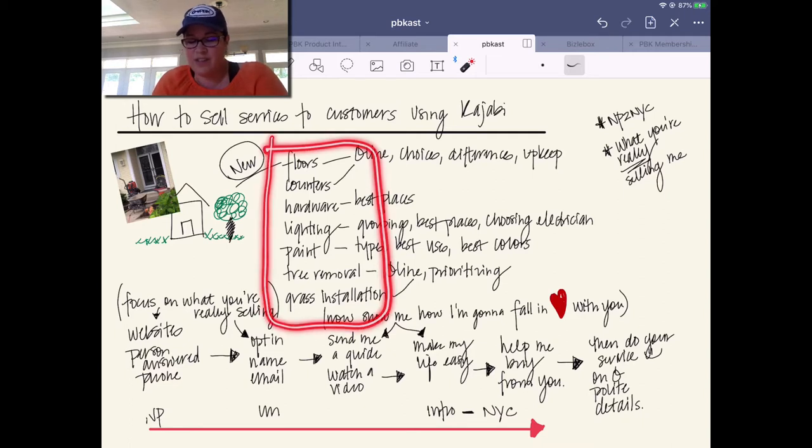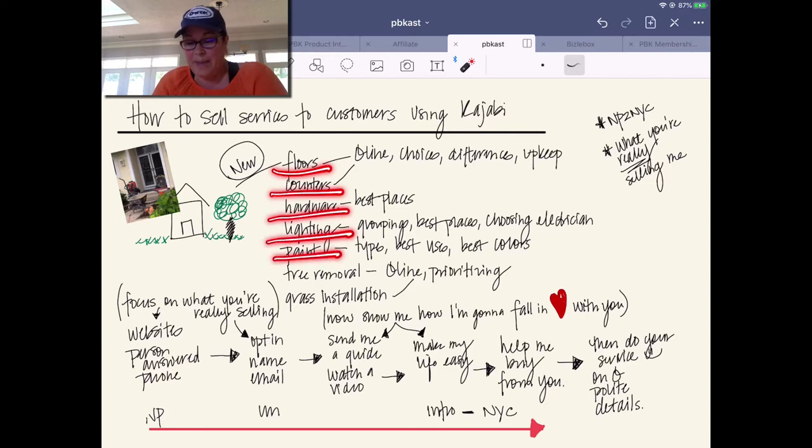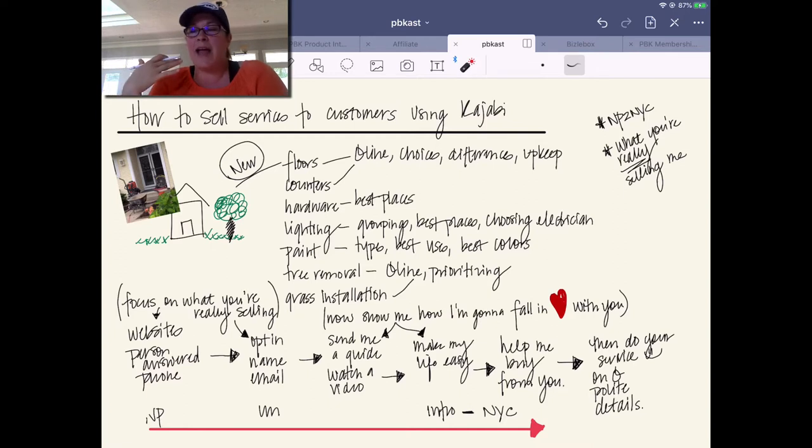Now, when they were here, guess what? Not a single company. Not a single one in all of these areas. So, our floors, our counters, our hardware, our lighting, our paint, our tree removal, or grass installation. Not a single person had an opt-in. Not a single person wanted to continue our relationship, wanted to guide me on the journey, wanted to help me be able to buy from them. This is the part that, as a consumer, also as a business owner who is so excited and passionate about helping people take a traditional business - I was a lawyer, for goodness sakes.